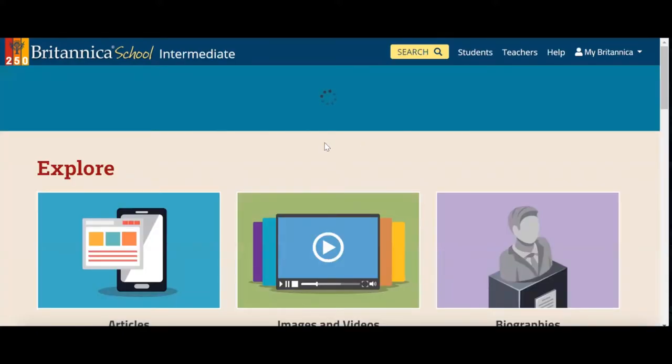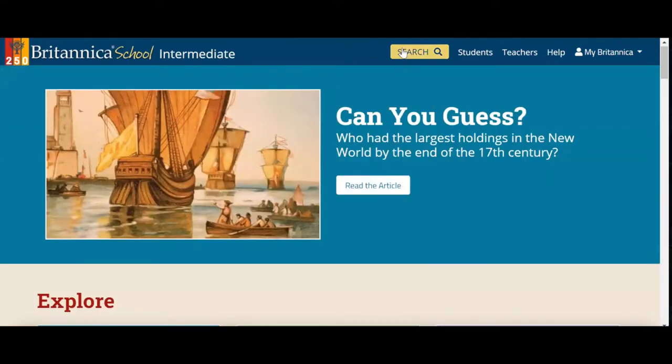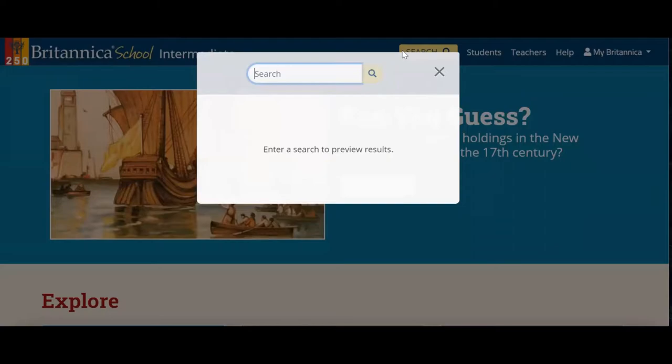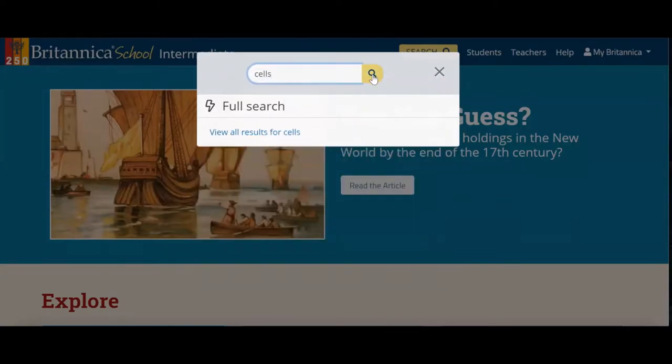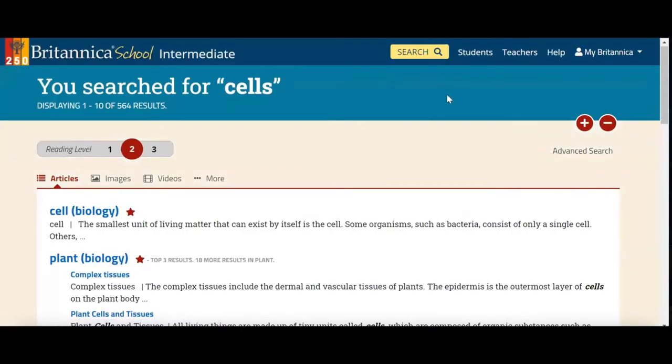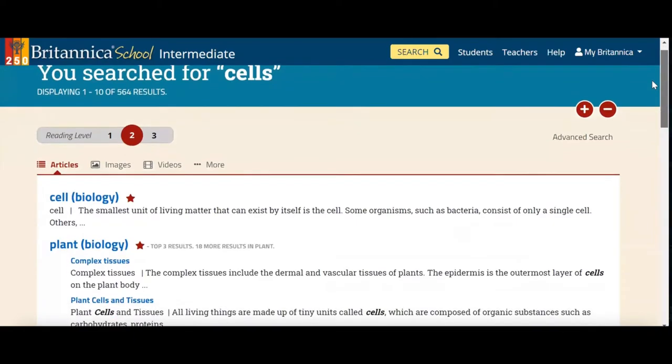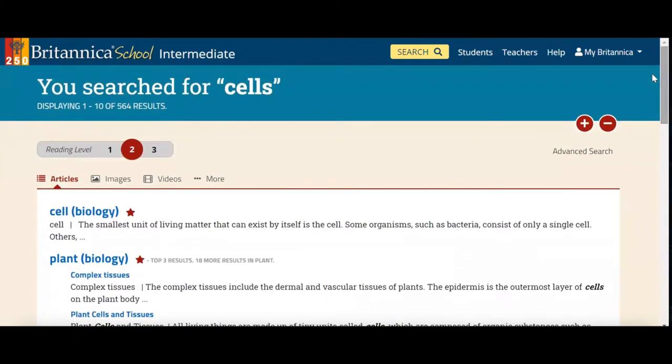Once you click on a particular branch, first and foremost, you're going to want to do a search. So I'm just going to do something quite generic, something related to science that is covered in both the MYP and also IBDP. Once you enter here, what's really great about Britannica is we've compiled information from articles, images, and videos into one user-friendly place.